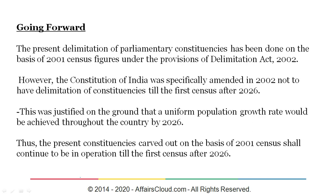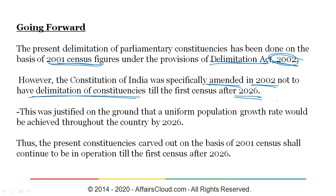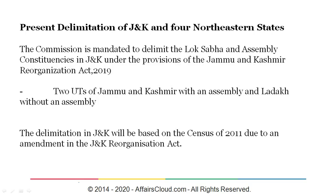Regarding the future of the delimitation act and commission: the present delimitation of parliamentary constituencies has been done on the basis of 2001 census figures under the Delimitation Act of 2002. However, the constitution of India was specifically amended in 2002 to not have delimitation of constituencies until after the census of 2026. The reasoning was that by 2026, the country would achieve uniform population growth throughout, and hence present constituencies carved out on the basis of the 2001 census shall continue to remain in operation until after the 2026 census.